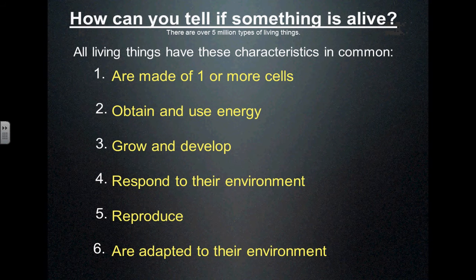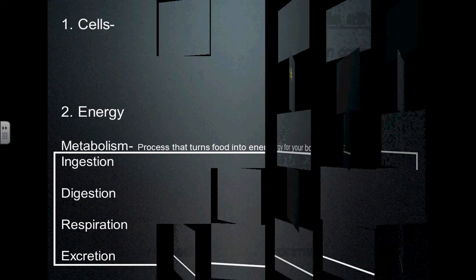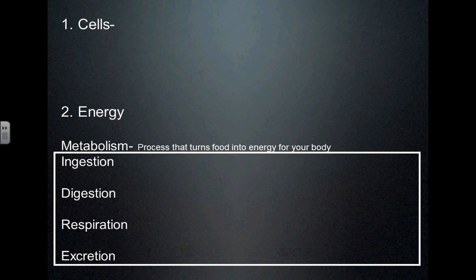So we'll talk about each one in a little bit more detail. First one: cells. Cells are what we call the basic unit of life, the building blocks of life. Everything that's alive is made of cells — if you look at a living organism under a microscope you'll see that they're all made of cells.